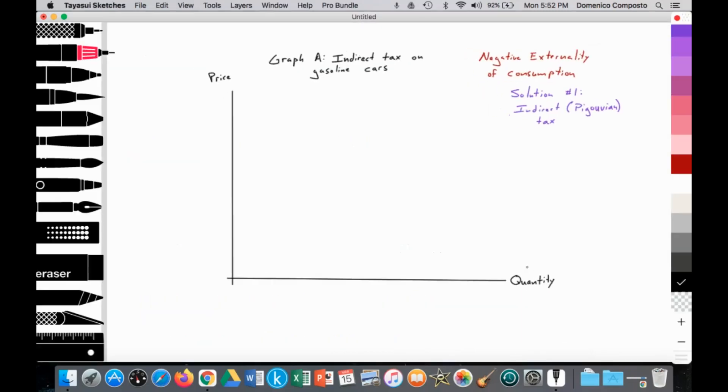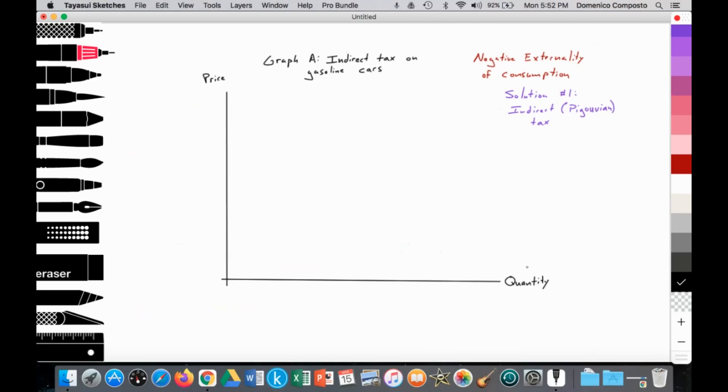So we're going to start drawing this from scratch, because since this graph has two supply and two demand curves, some students might have a little bit of difficulty, or as they draw it, they might mislabel a few areas. So this will be my recommendation of how to draw this. So we're looking at an indirect tax applied to gasoline cars to correct a negative externality of consumption. This is the first solution that we're proposing, a Pigovian tax to correct this. So let's go ahead and illustrate this.